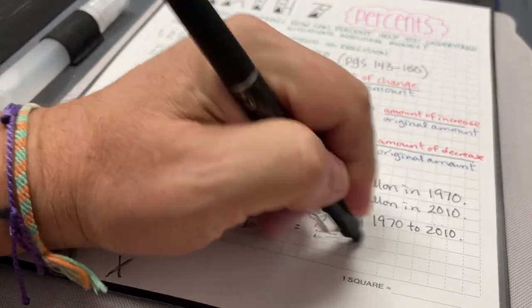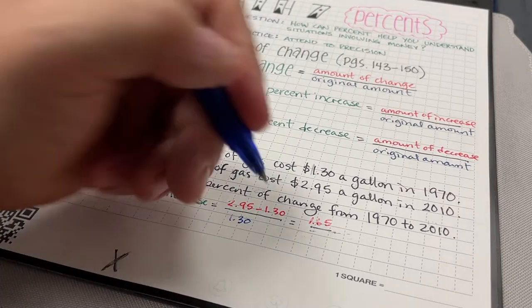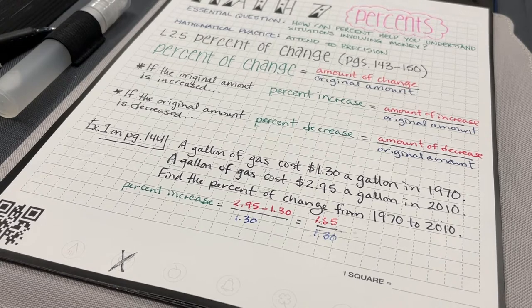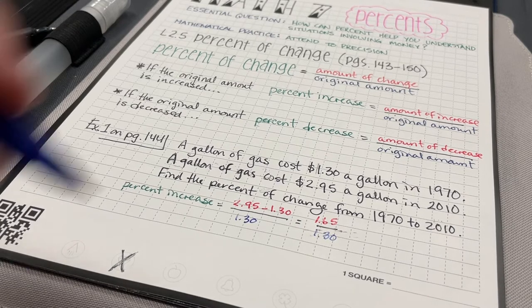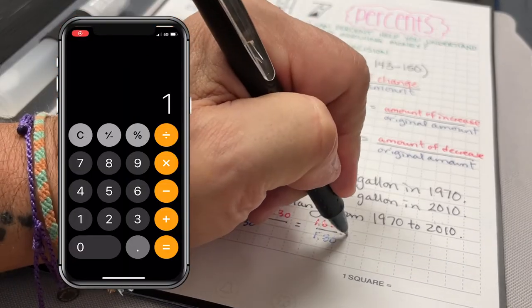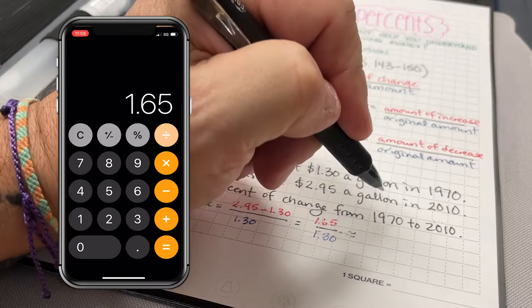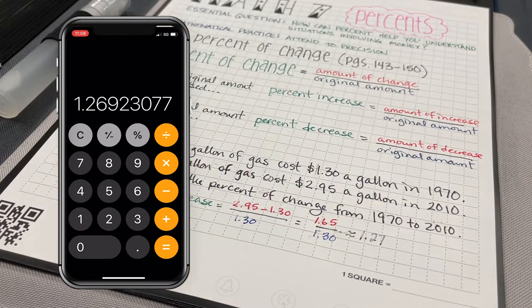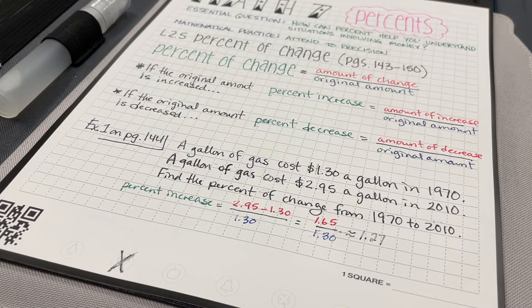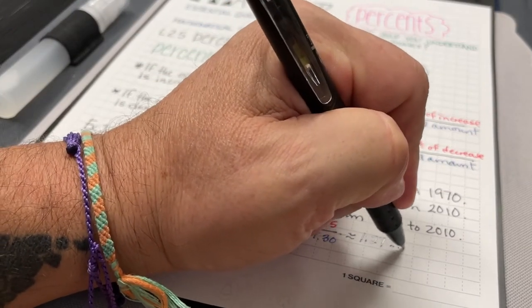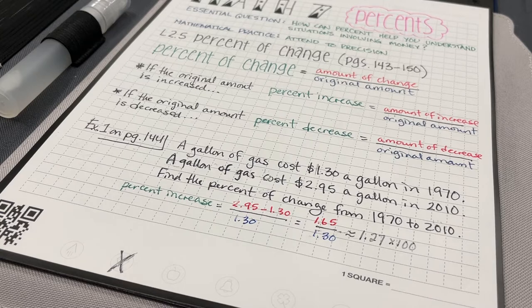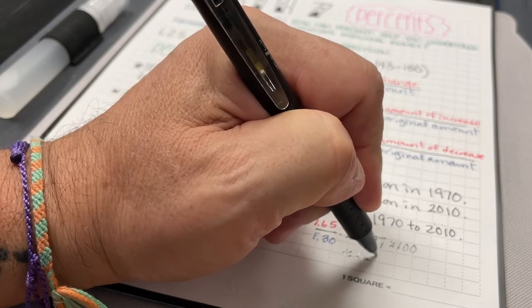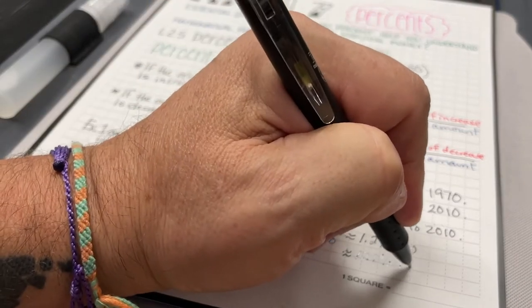So $1.65 divided by $1.30 is about, and I'm going to round it to the nearest tenth, $1.27. Now, in order for me to make this a percent, I now need to multiply this by 100. And so 1.27 times 100 is going to be about 127% increase.